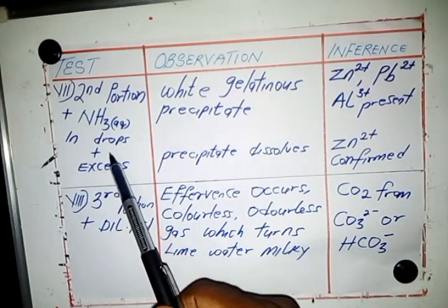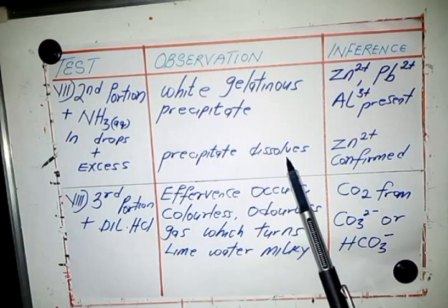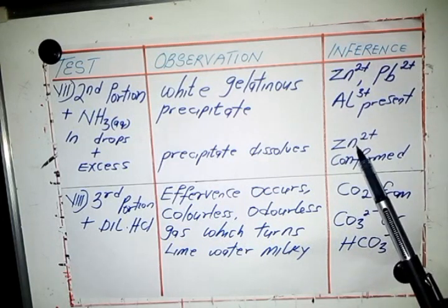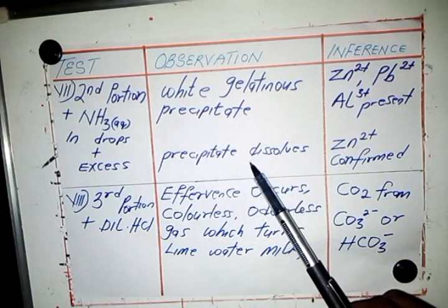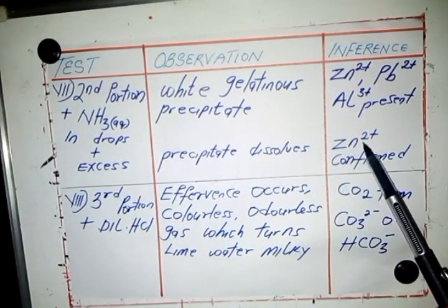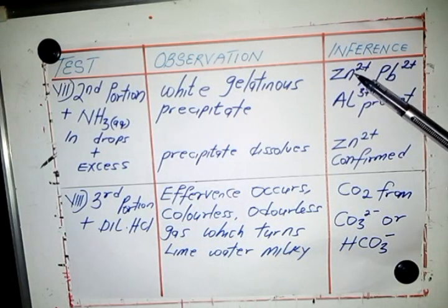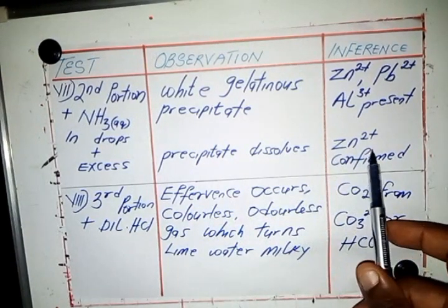Now adding excess aqueous ammonia — in this case the precipitate dissolves. When that happens, you can confirm zinc, because out of those three ions, only zinc undergoes this observation where the precipitate dissolves in excess ammonia. Zinc is a transition metal and that is why it behaves this way. For lead and aluminium, the precipitate is insoluble in excess ammonia. So zinc is confirmed.